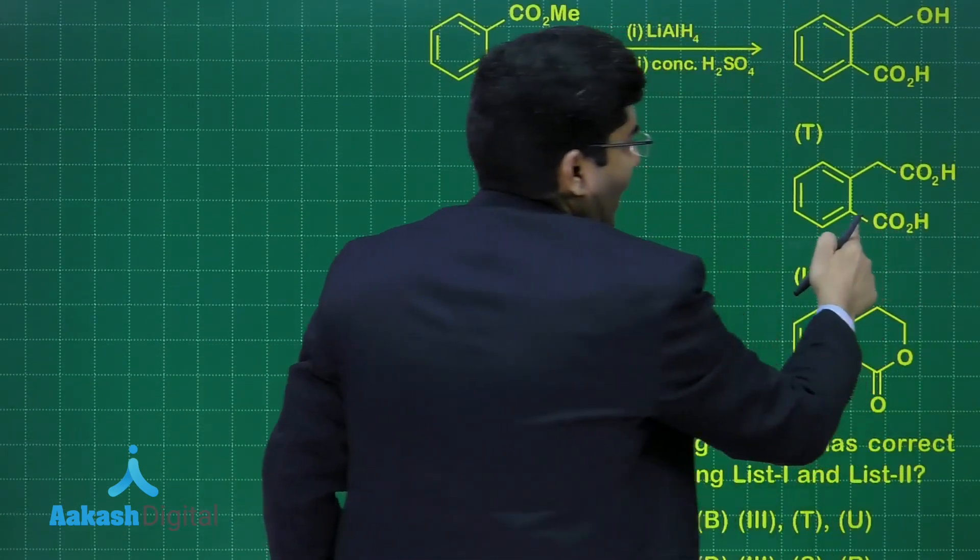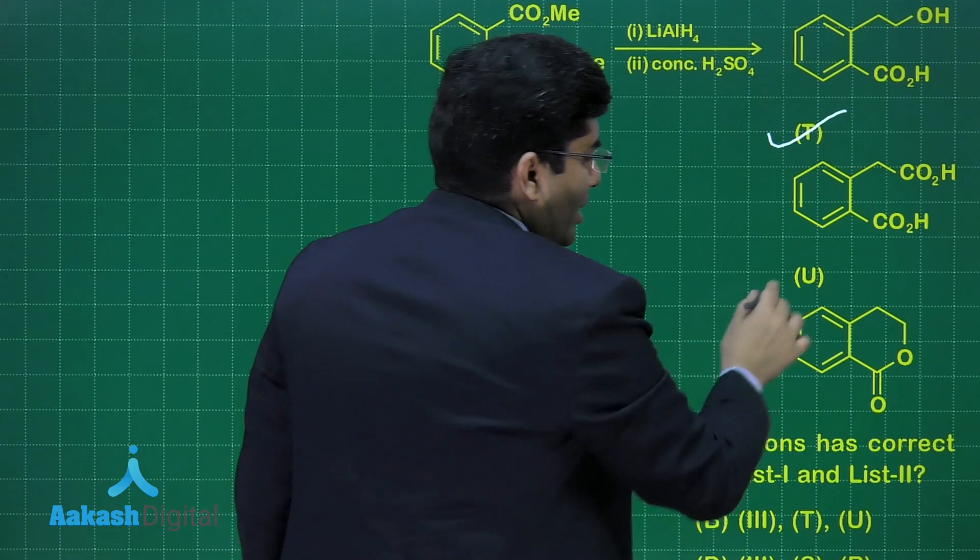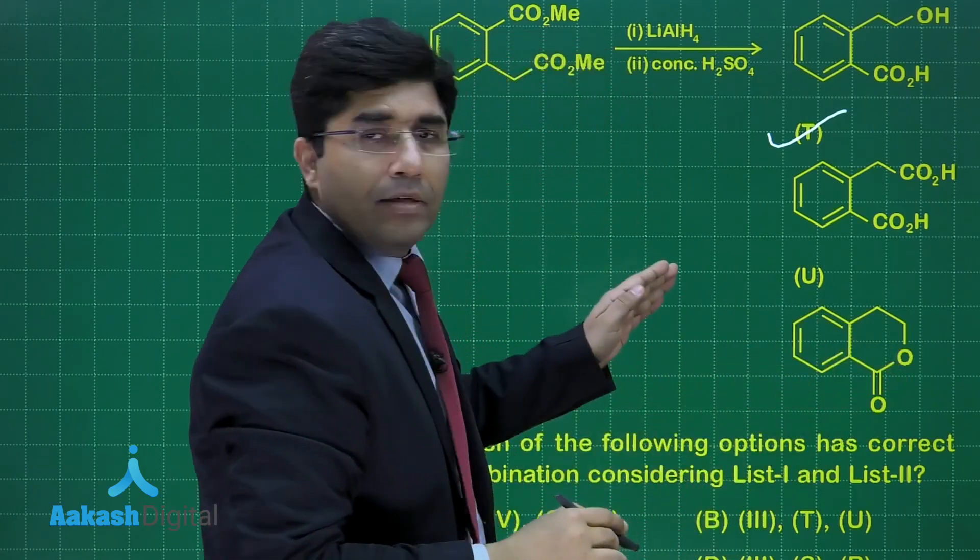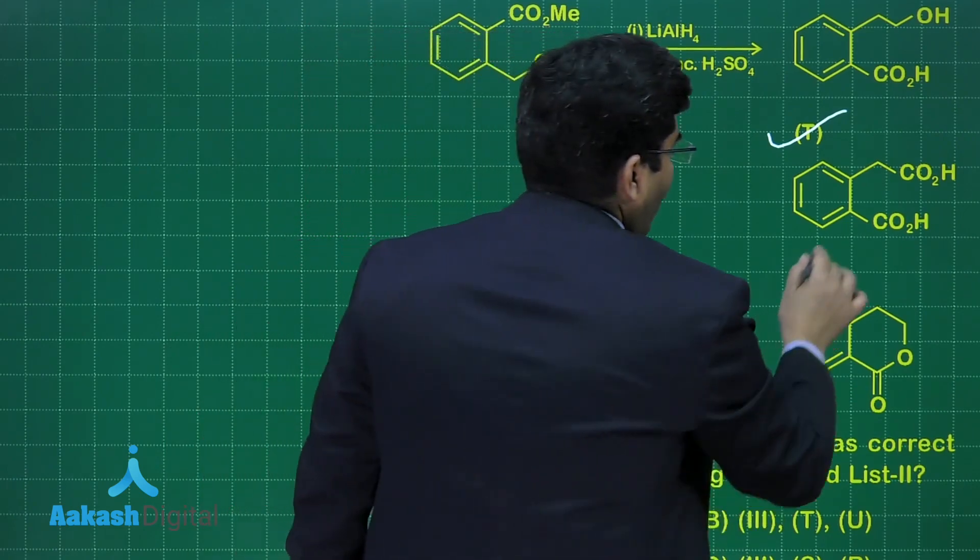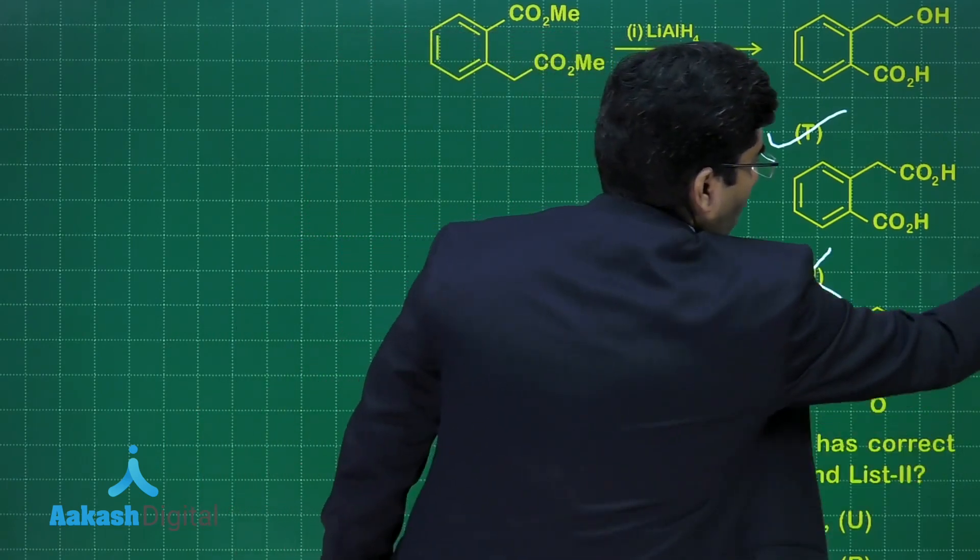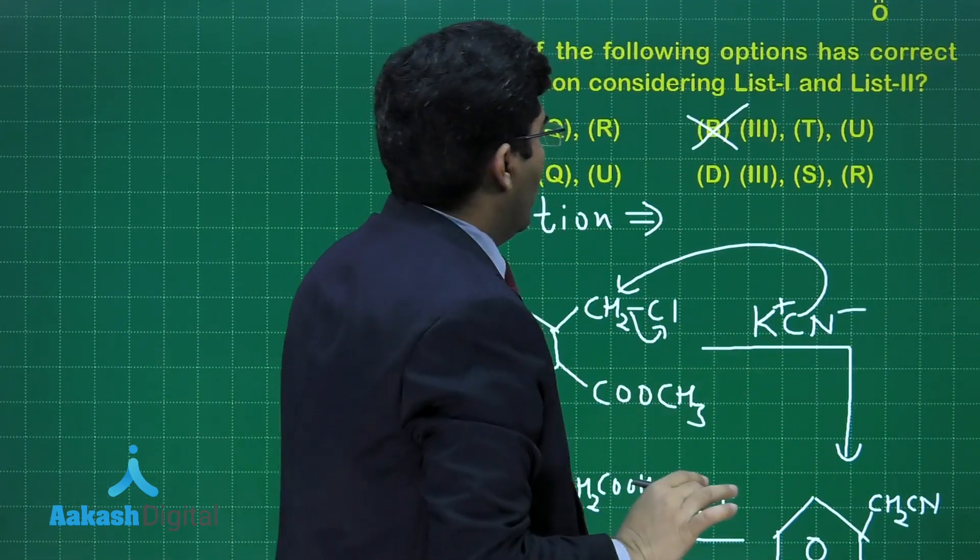This is T. Yes, this is forming in this particular reaction. This is U and this is cyclic ester. But cyclic ester is not forming in this reaction. That is why this is wrong and we can say that B cannot be the answer.